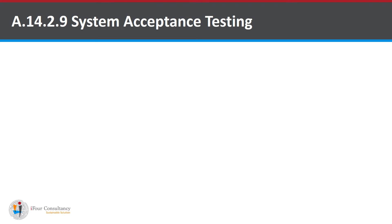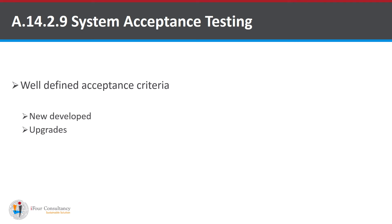The last one is System Acceptance Testing. It states that acceptance testing programs and related criteria shall be established for new information systems, upgrades, and new versions. This acceptance criteria must be developed in two separate ways: first for newly developed systems, and second for upgrades.